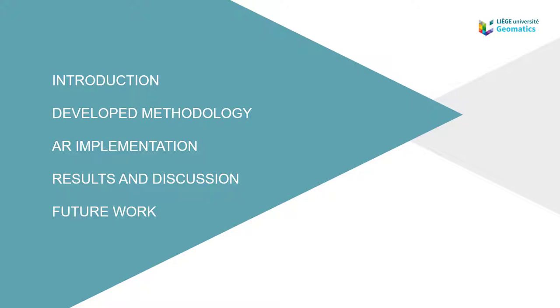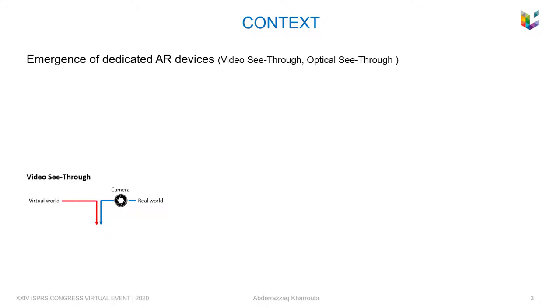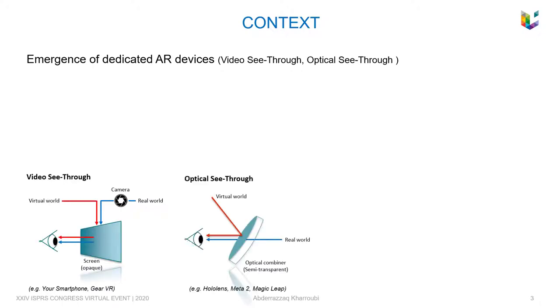Let's start with Mobile Augmented Reality. It essentially consists of superimposing virtual elements on real objects to give added information and enrich the interaction with reality without distracting us from the real world.